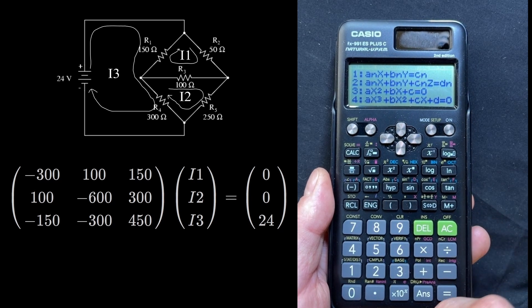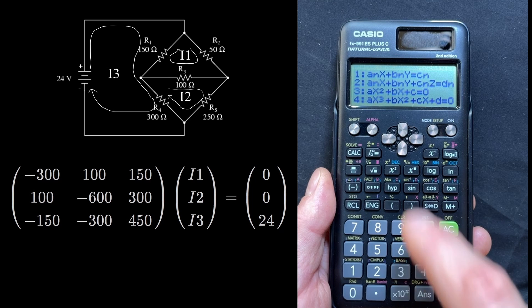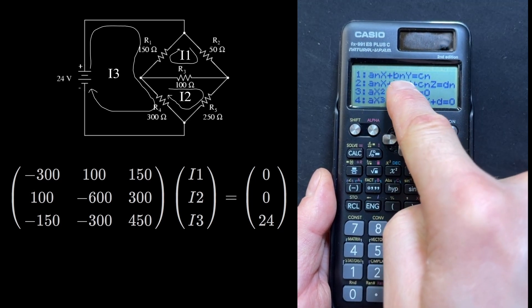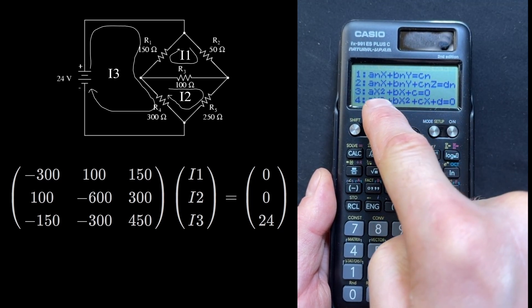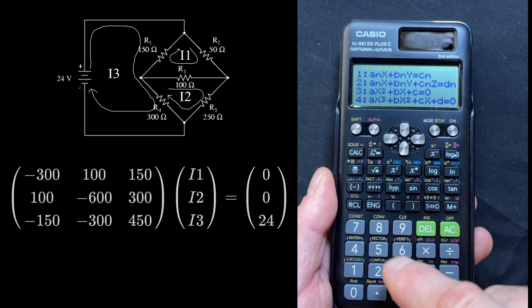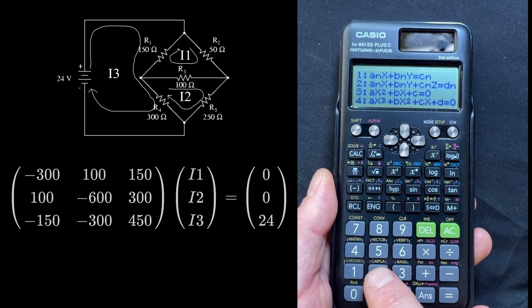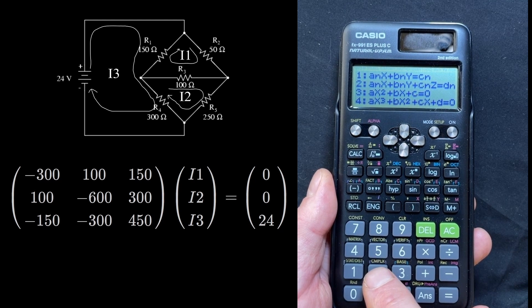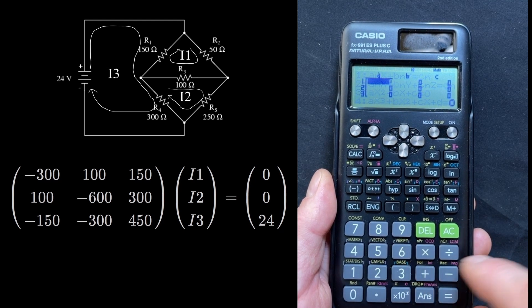Now it's asking, what kind of equation do we want to solve? What kind of set of equations is it? Is it two variable equations? Is it a set of three variable equations? Is it a quadratic? Or is it a polynomial? So we want to set, because we have I1, I2, and I3, it's a three variable equation. Three variables, three unknowns. So we hit 2.